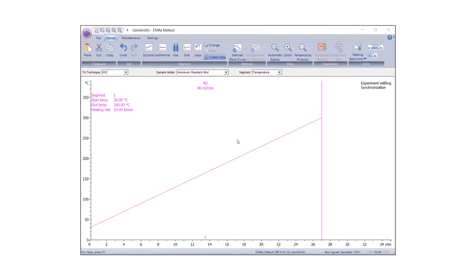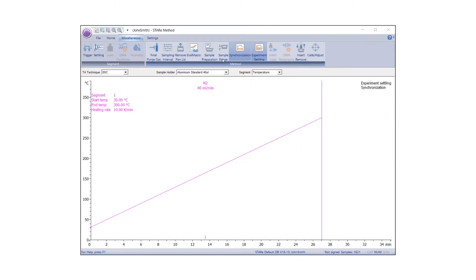First, define the weigh in range in the method window. Under the miscellaneous tab, select Sample Range to specify the sample weight range.